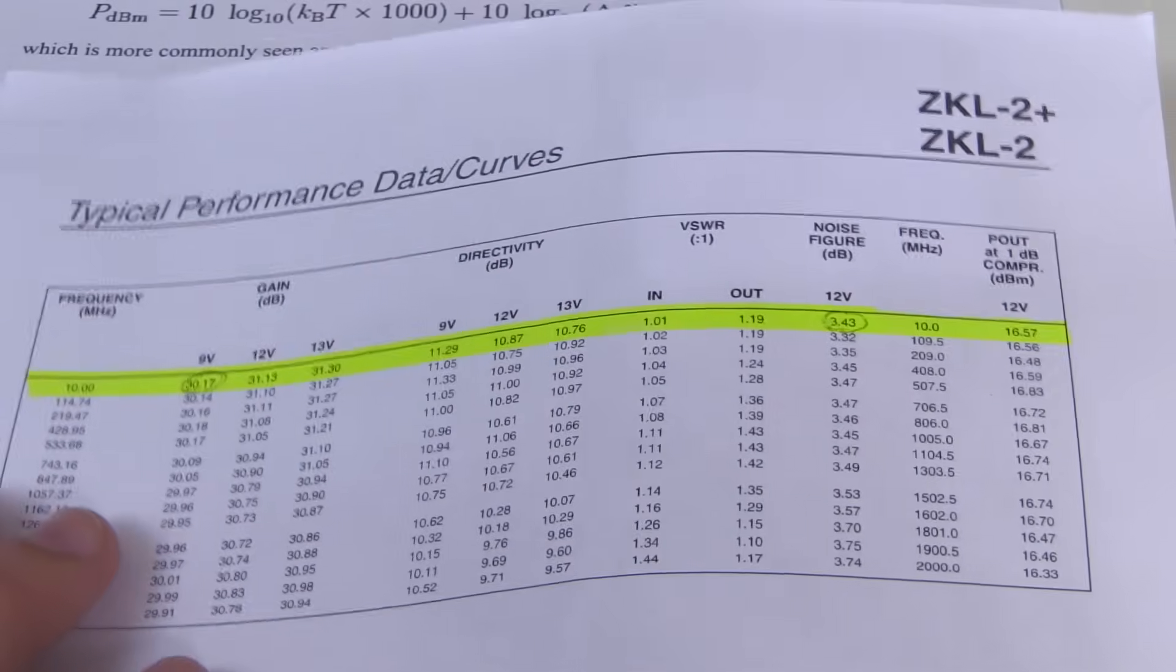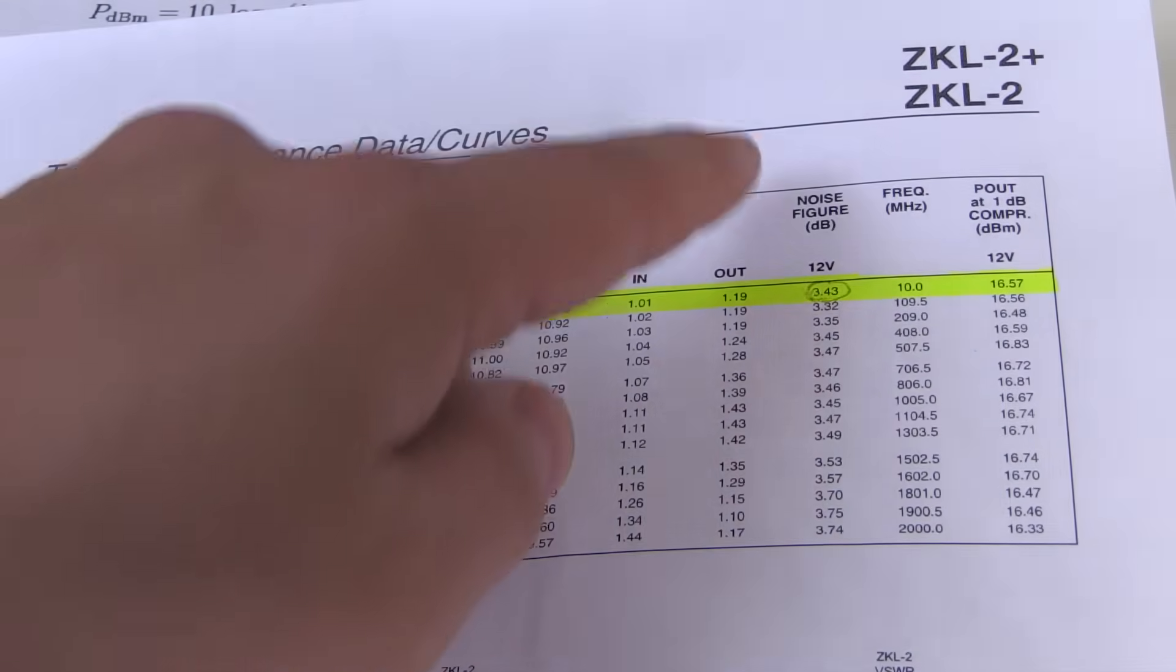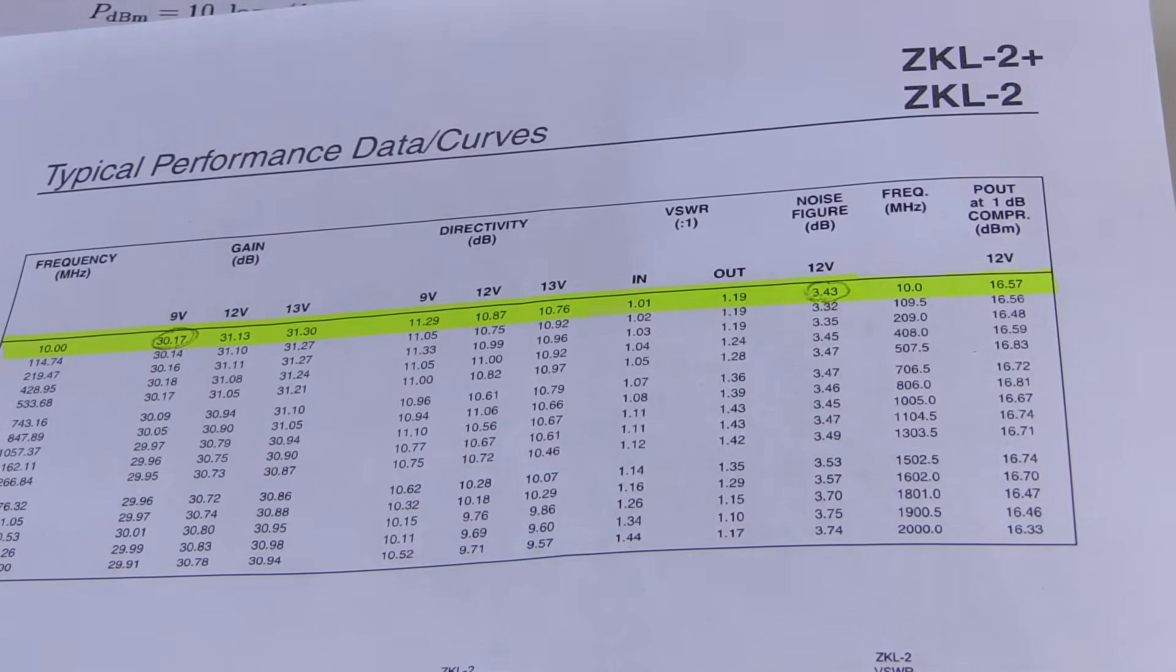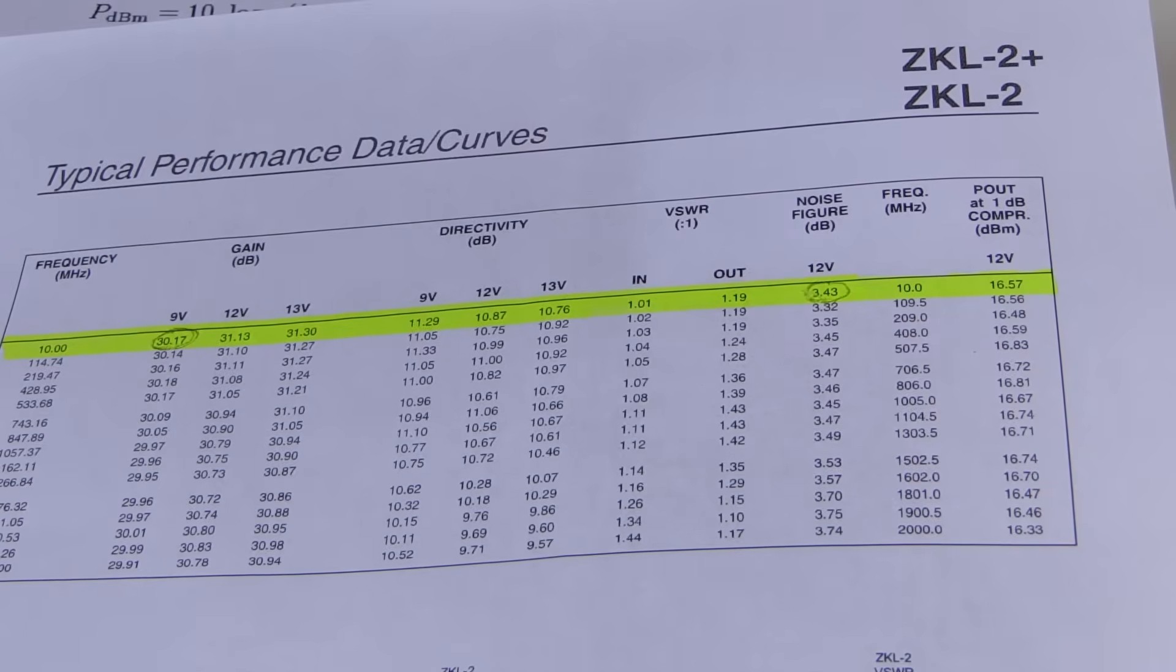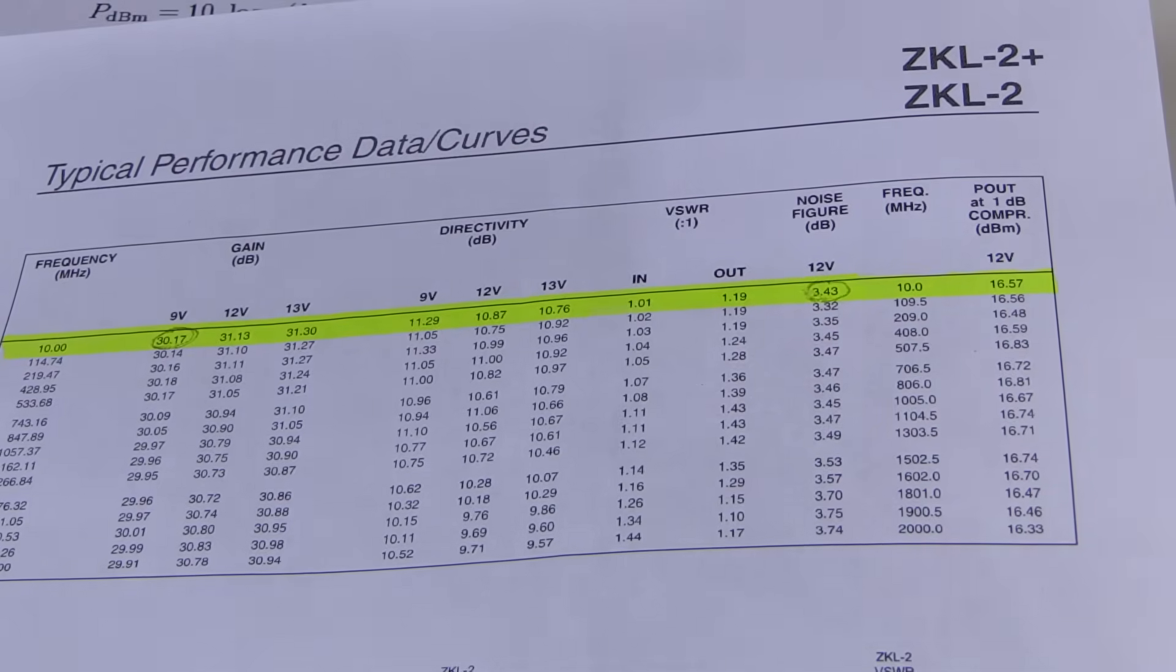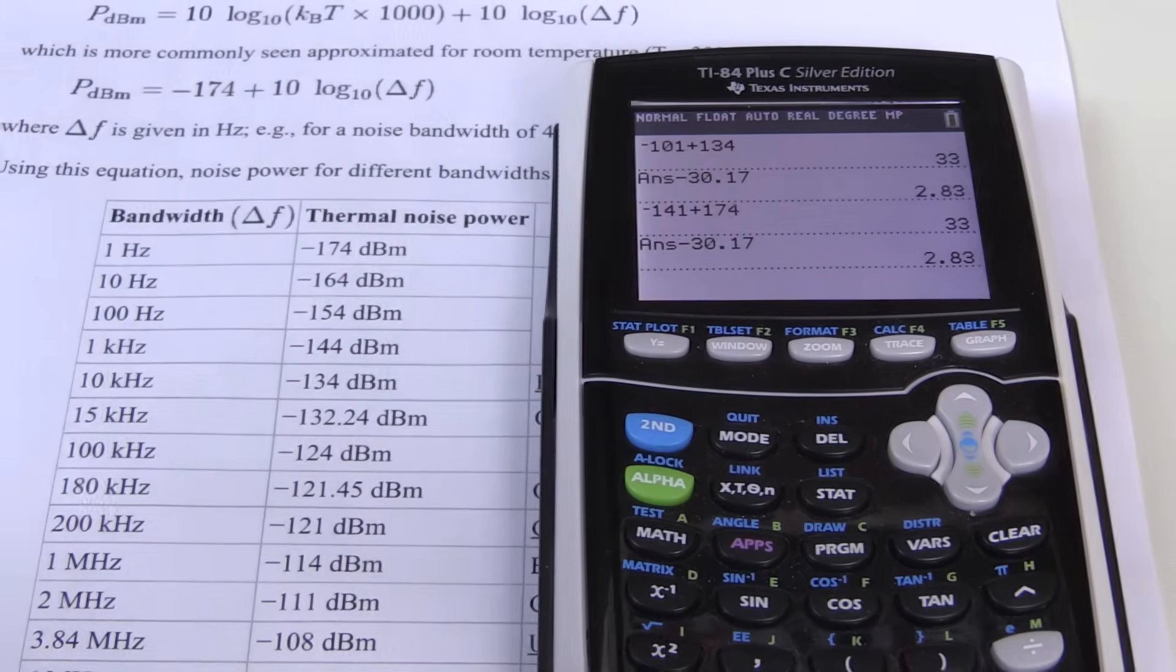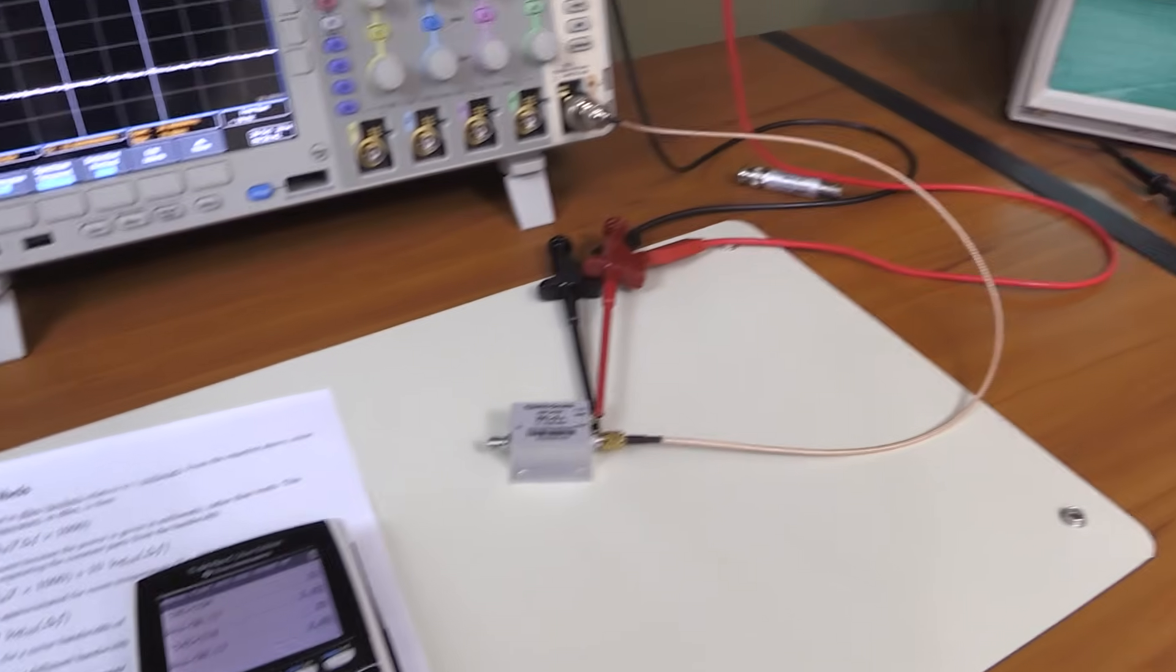If we go back to the datasheet, we see that our expected noise figure at 12 volts is supposed to be 3.43 dB. So the actual noise performance of this amplifier, as we have measured it, is much better than what MiniCircuits promised in the datasheet. And I'll zoom out here and actually show the setup.